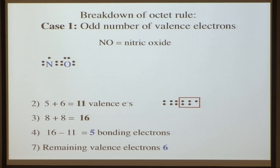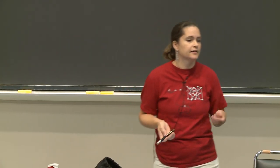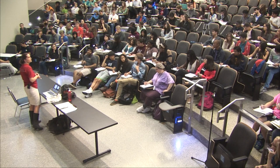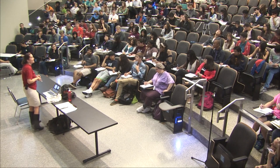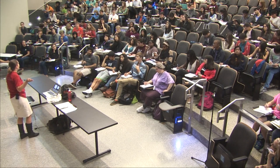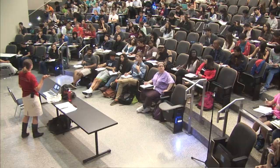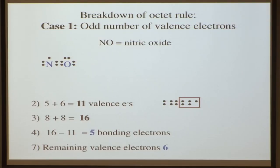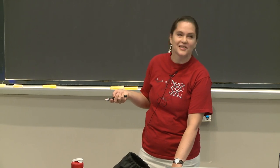This is a highly reactive radical species. A student asks: how do you know the radical electron goes on the end? That's a great question — we should calculate the formal charges and think about where things go. That could be a clicker question for next time.